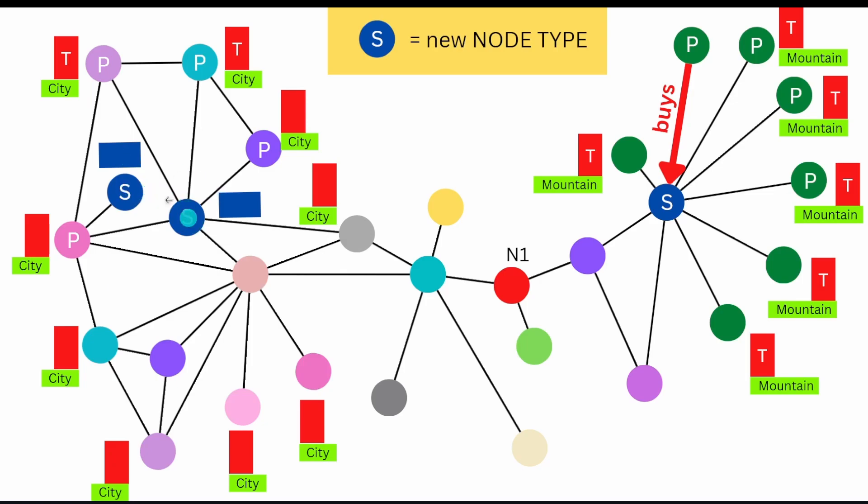With these new node types, we don't just have them in this community. The mountain community also buys shoes. For demonstration purposes, this node represents a shoe.